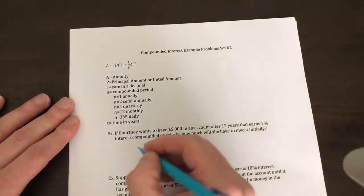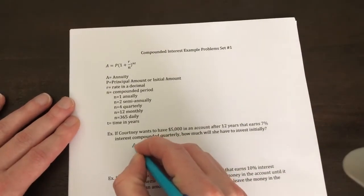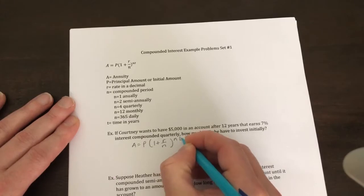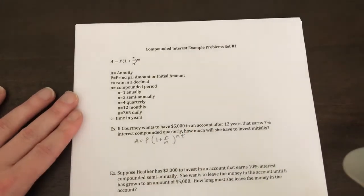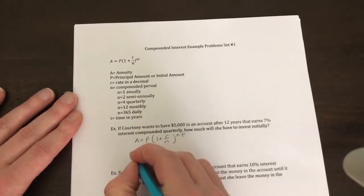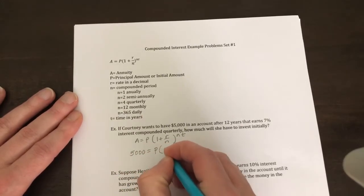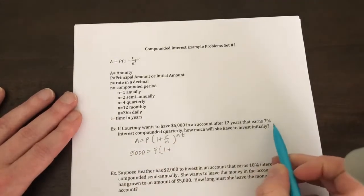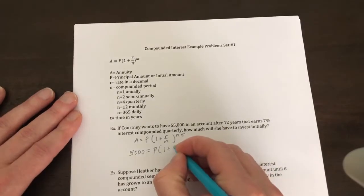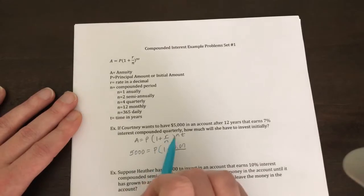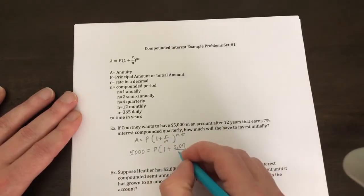I'm going to set up our formula: A = P(1 + R/N)^(NT). She wants $5,000 in the account at the end of the period. Interest rate is 7%, so that as a decimal is 0.07. It's compounded quarterly, so N equals 4, and 4 times 12 years.